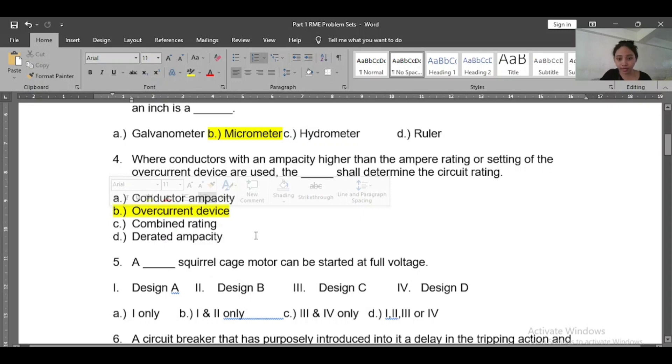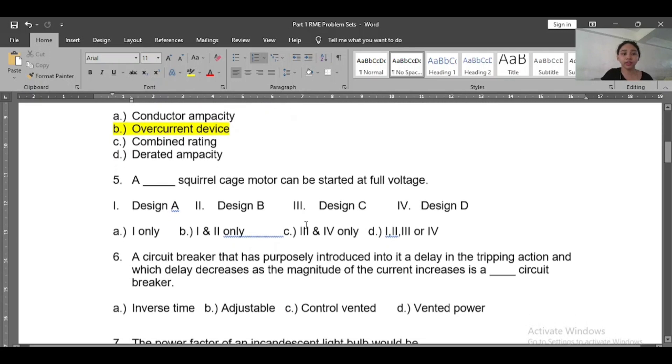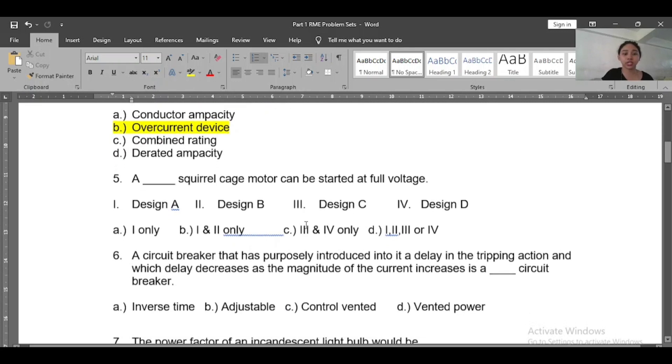So the overcurrent device shall determine the circuit rating. And then number five: A squirrel cage motor can be started at full voltage. A) One only, B) One and two only, C) Three and four only, D) One, two, three, and four. So the answer is all of the above - one, two, three, and four.